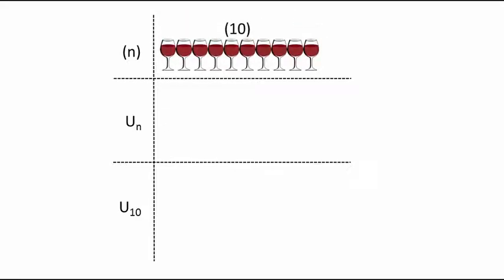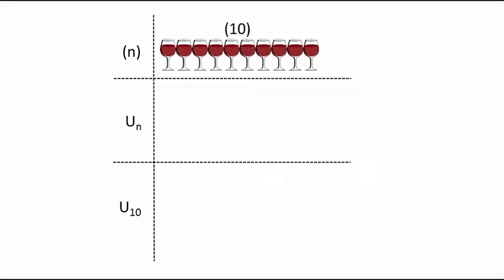So, to find the number of clinks with 10 glasses, all we need to do is substitute the number 10 into our nth term rule. The nth term rule is sometimes referred to as u_n, and the 10th term may be referred to as u_10.